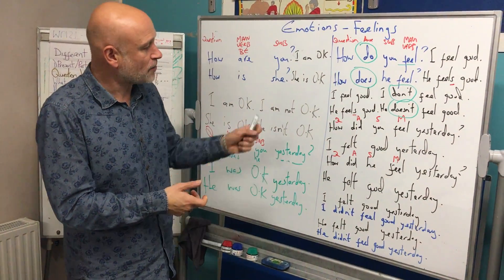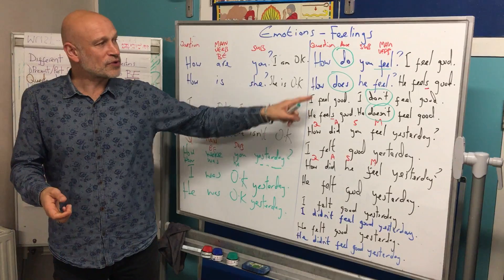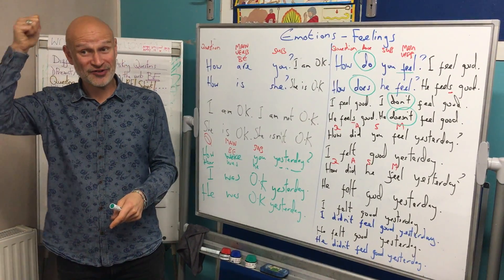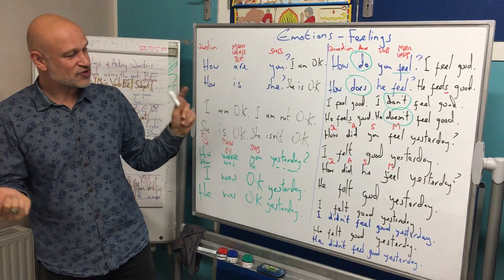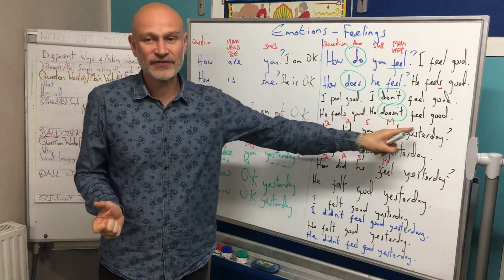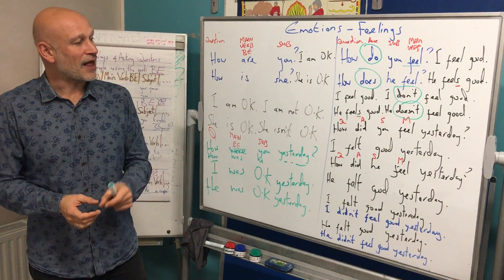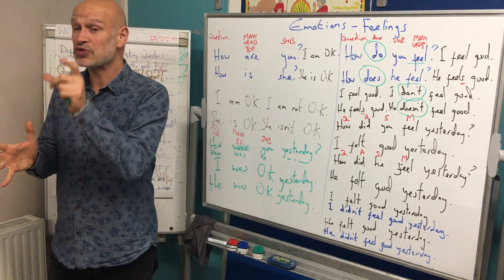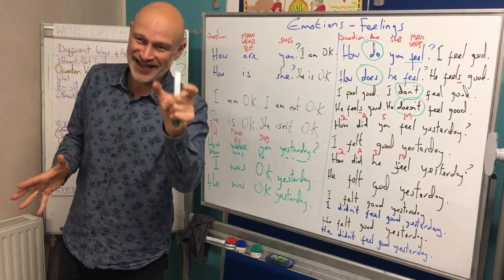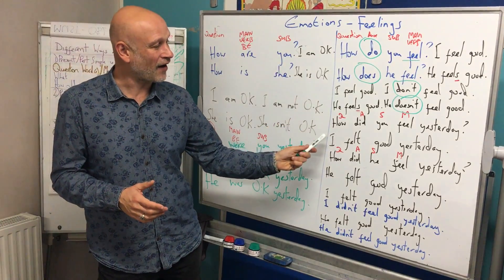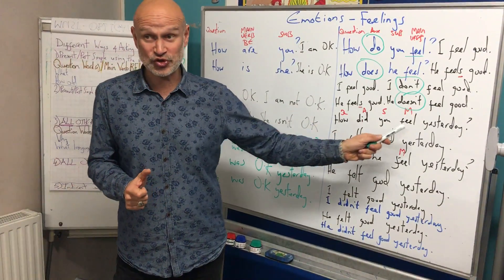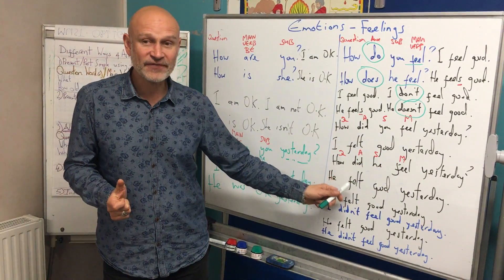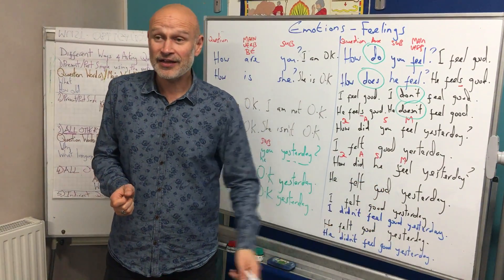In the past simple, we don't use 'do' or 'does' because that's present — we use 'did' because that's the past. So for questions: how did you feel yesterday? For positive sentences, we use the verb in the past tense: I felt good yesterday. How did he feel yesterday? He felt good yesterday.